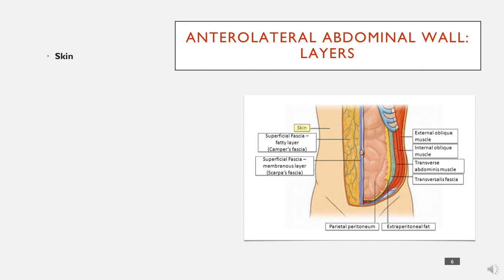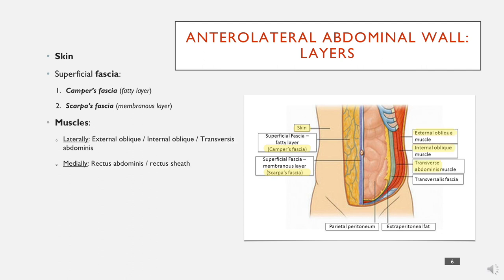The first layer is obviously the skin. Underneath that we have fascia — there are two types: the fatty layer on top, also called Camper's fascia, and below that a membranous layer. Going over the muscles again, we have separate groups laterally and medially. The transversalis fascia is under all the muscles — both medial and lateral — and is just a layer of fascia beneath the muscles.